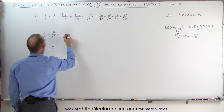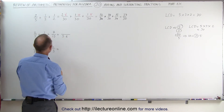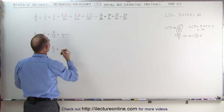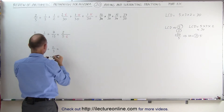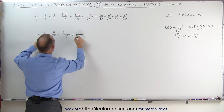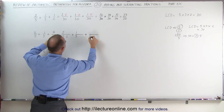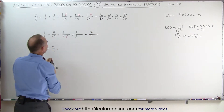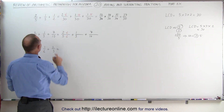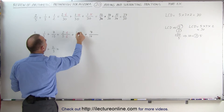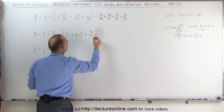To get to 30 — 5 times 6 will give me 30, which means I also have to multiply the numerator by 6. Plus, here we have to multiply this times 10, and plus this has to be multiplied times 3 to get 30. So 5 times 6 is 30, so we also have to multiply the numerator by 6. 3 times 10 is 30, so we have to multiply the numerator times 10. And 10 times 3 is 30, which means we have to multiply the numerator times 3.